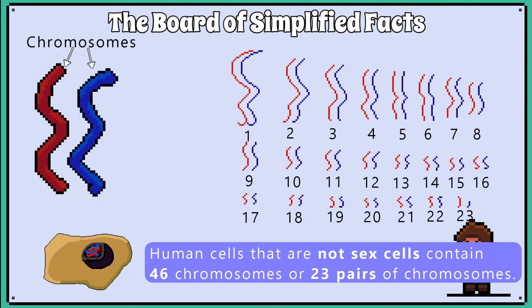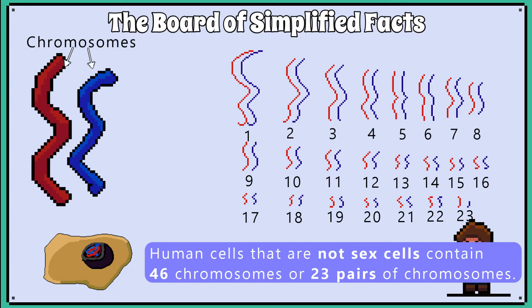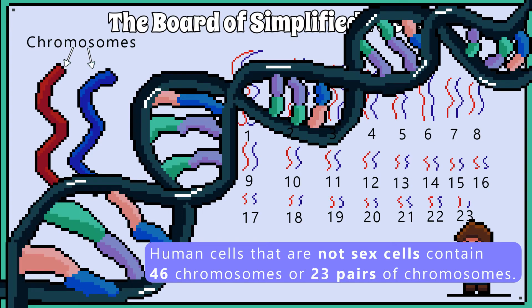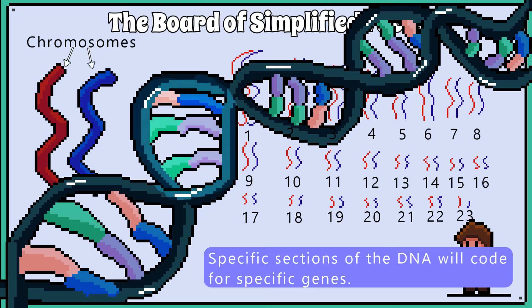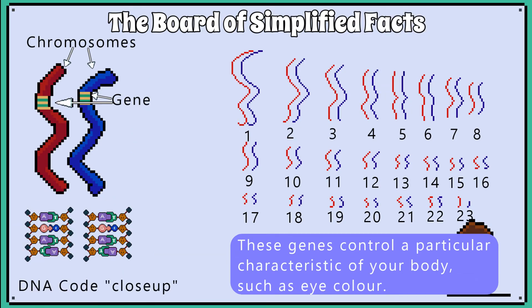In each pair, you will have one chromosome inherited from your biological father and one chromosome inherited from your biological mother. Chromosomes are just made up of one long strand of DNA, and certain sections of DNA will code for certain genes. These genes control a particular characteristic of your body, such as eye colour.